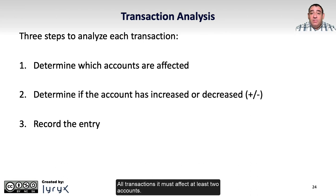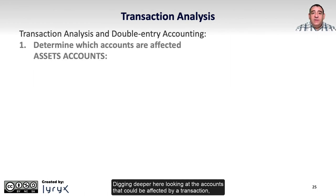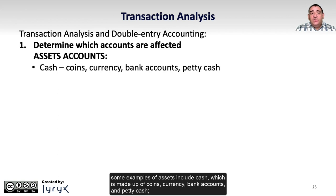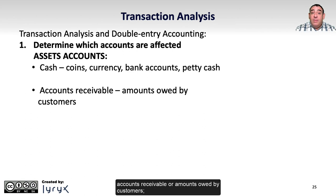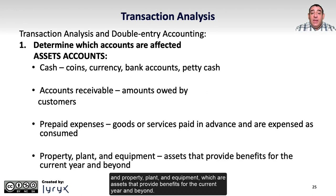All transactions must affect at least two accounts. Some examples of assets include cash, which is made up of coins, currency, bank accounts, and petty cash; accounts receivable, or amounts owed by customers; prepaid expenses, or goods or services that are paid in advance and are expenses when consumed; and property, plant, and equipment, which are assets that provide benefits for the current year and beyond.